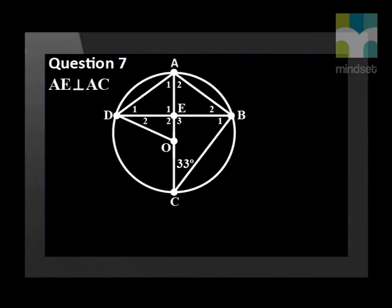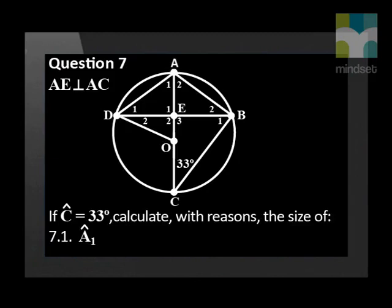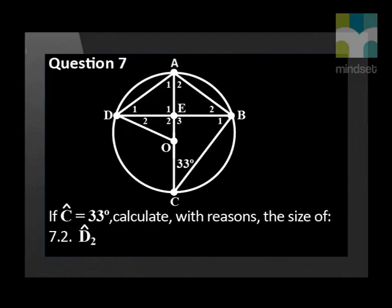Question 7. In the diagram, AC is the diameter of the circle with center O. AC and chord BD intersect at E. AB, BC and AD are also chords of the circle. OD is joined. AE perpendicular BD. If angle C is equal to 33 degrees, calculate with reasons the size of angle A1. Calculate the size of angle D2. Show that AE bisects angle DAB.